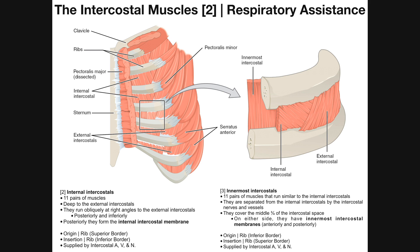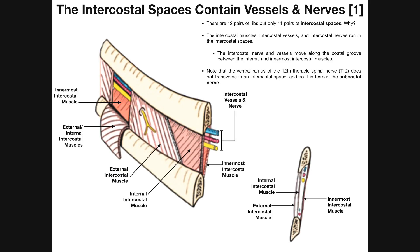Now let's get a feel for where the intercostal nerves and vessels actually run. Looking at this picture, we have the external intercostal muscle superficially. Deep to that is the internal intercostal muscle. On the posterior aspect of the ribs, that's where we find the innermost intercostal muscle. The intercostal nerve, artery, and vein actually run in the intercostal space between the innermost intercostal muscle and the internal intercostal muscle.